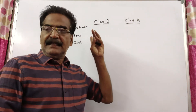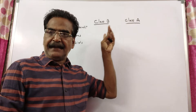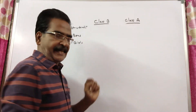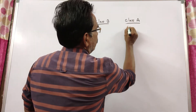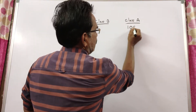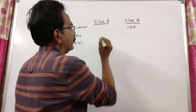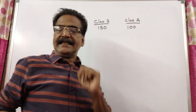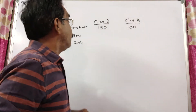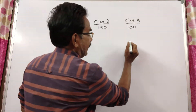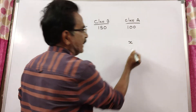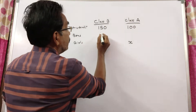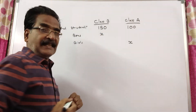The number of students in class B is 50% more than the number of students in class A. Say the number of students in class A is 100, then the number of students in class B is 150. The second statement is: the number of girls in class A, say X, is equal to the number of boys in class B.